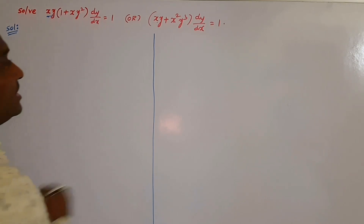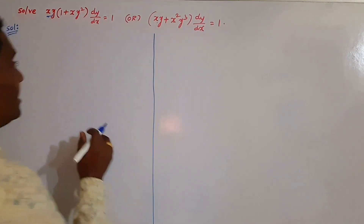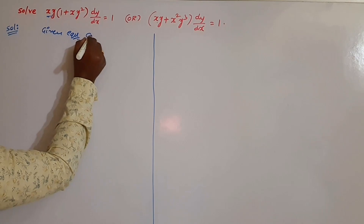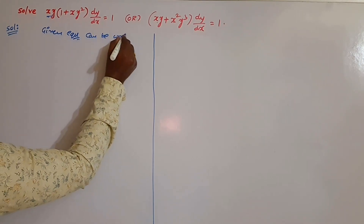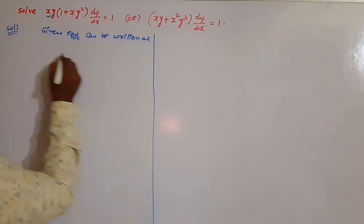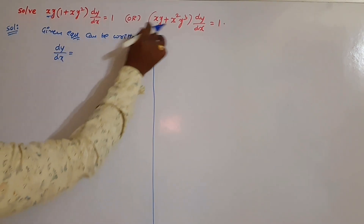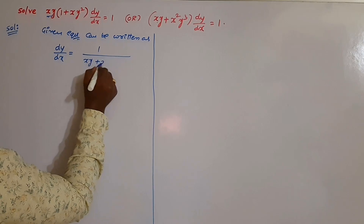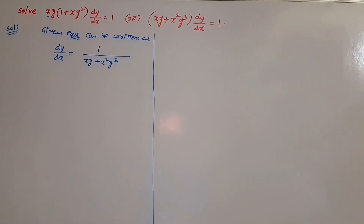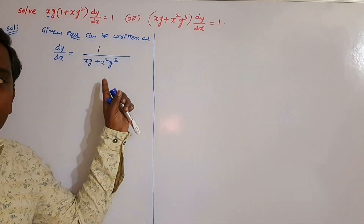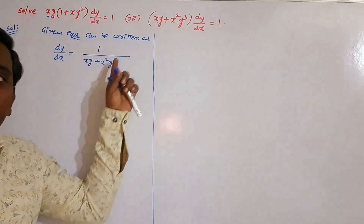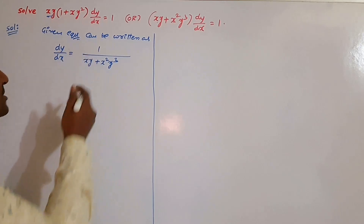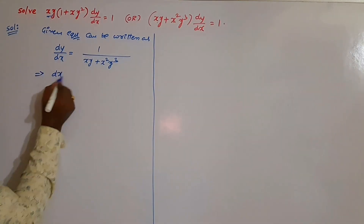First of all, we have to find out the value of dy by dx. The given equation can be written as dy by dx is equal to 1 by xy plus x squared y cubed. So, we have to find out the reciprocal — that is, dx by dy.